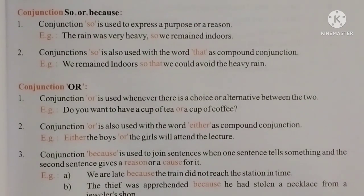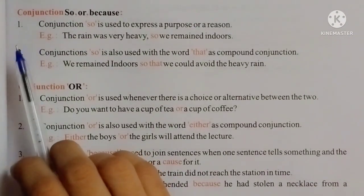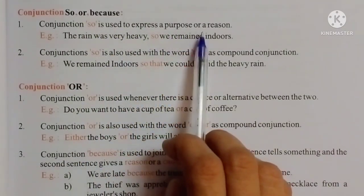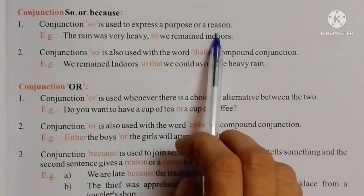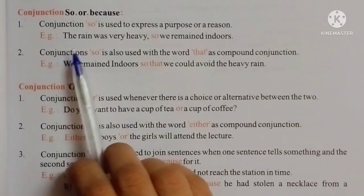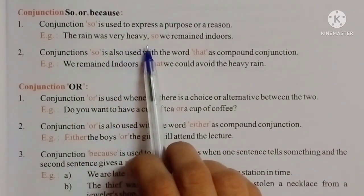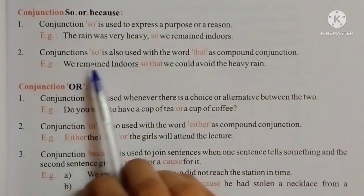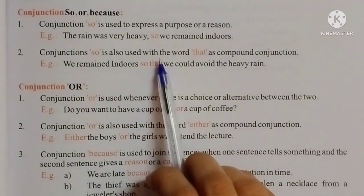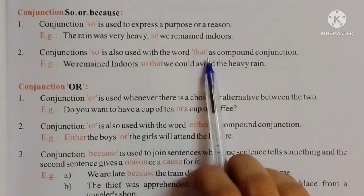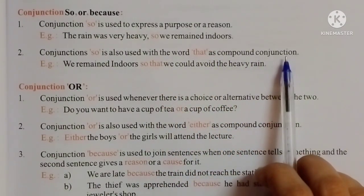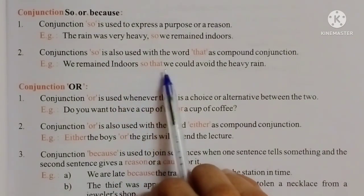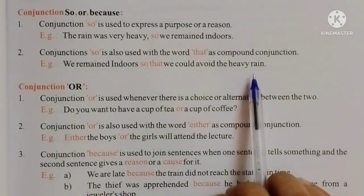Conjunction 'so' and 'because'. Conjunction 'so' is used to express a purpose or a reason. Example: The rain was very heavy, so we remained indoors. Conjunction 'so' is also used with the word 'that' as a compound conjunction: We remained indoors so that we could avoid the heavy rain.